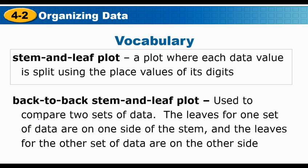We're going to talk about organizing data today. We have a couple of definitions: a stem-and-leaf plot, which you've seen before — that's a plot where each data value is split using the place values of its digits. Then we have a back-to-back stem-and-leaf plot, which is a more specific version where you can compare two different data sets because you have leaves on each side of the stem.